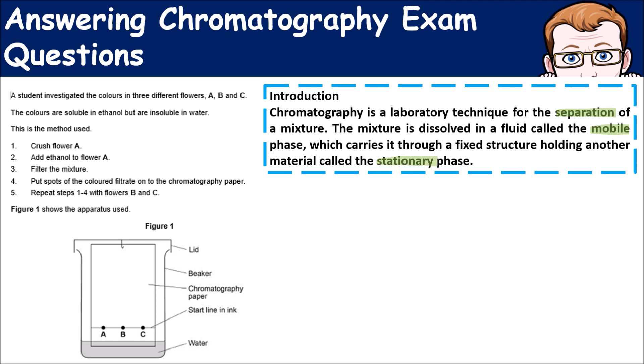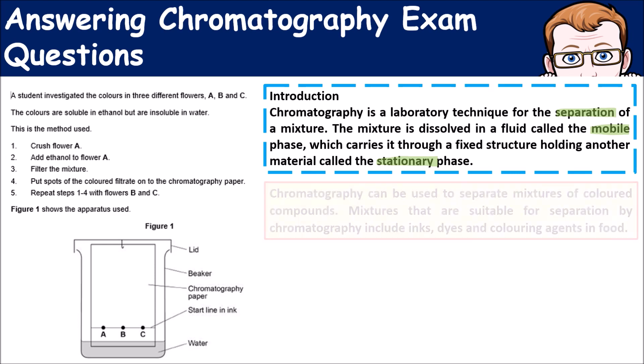The mobile phase is where it's moving; the stationary phase is the part that isn't. Chromatography can be used to separate mixtures of colored compounds, which is quite important in this question. Mixtures suitable for separation include inks, dyes, and coloring agents.